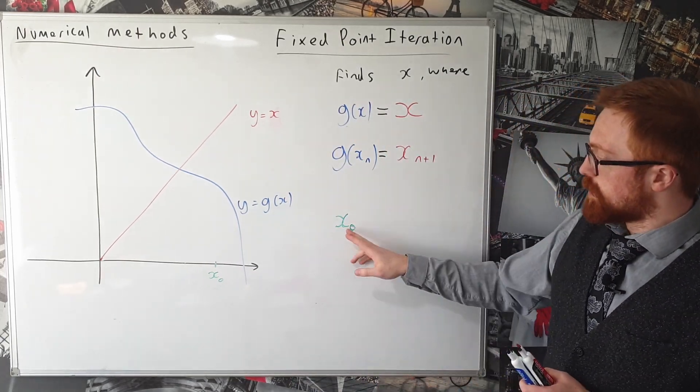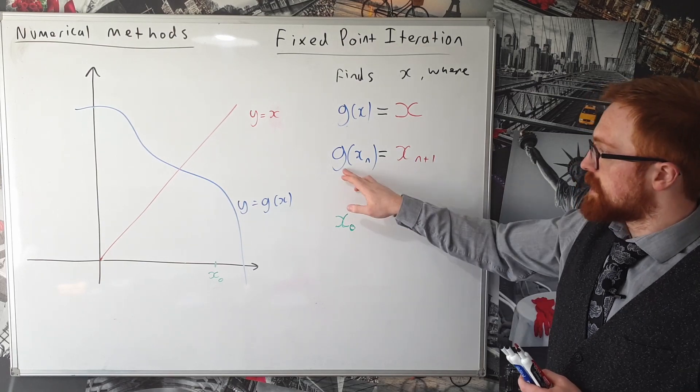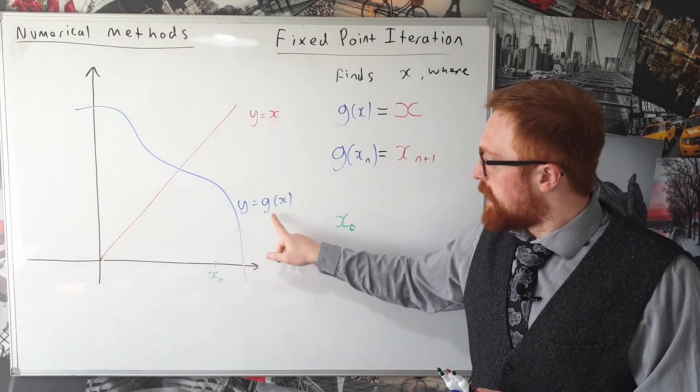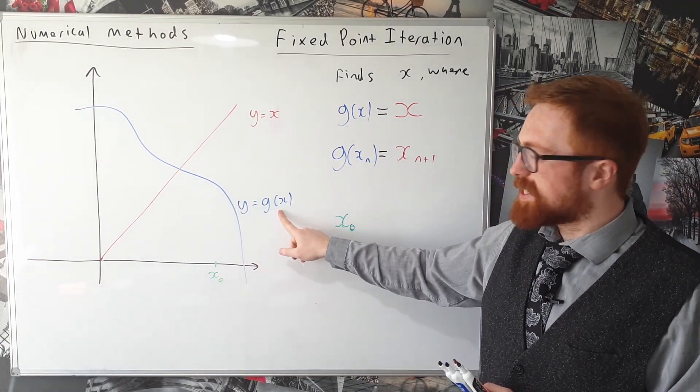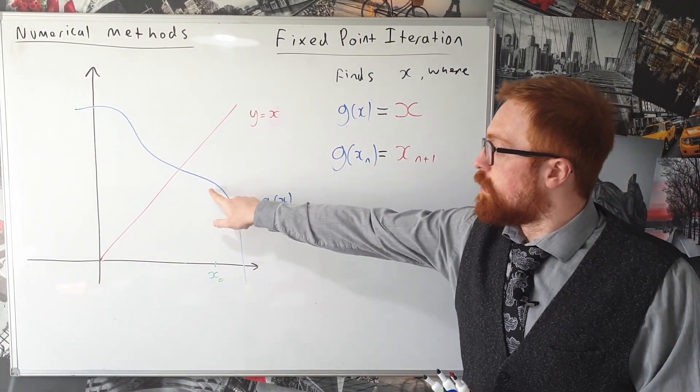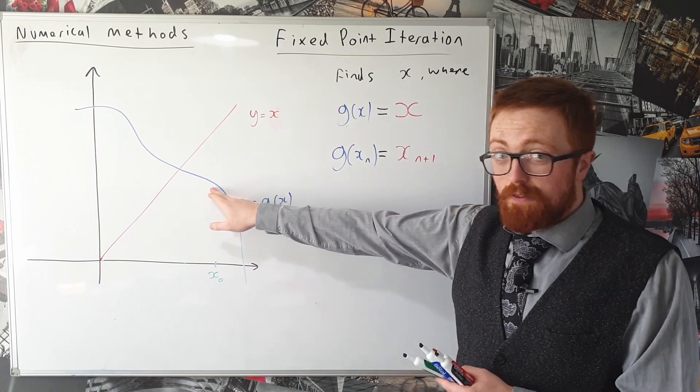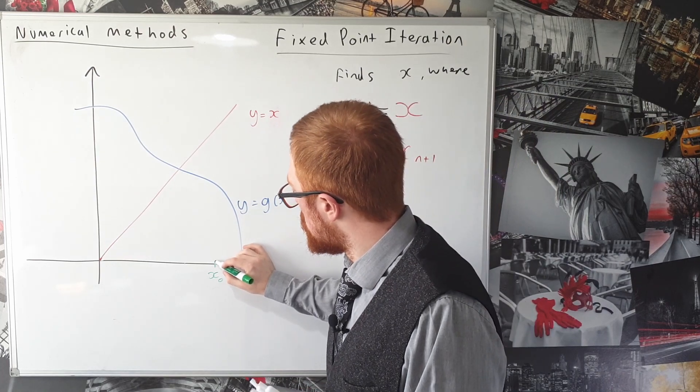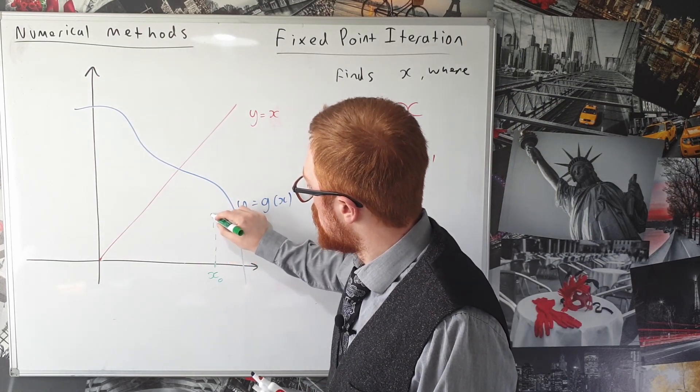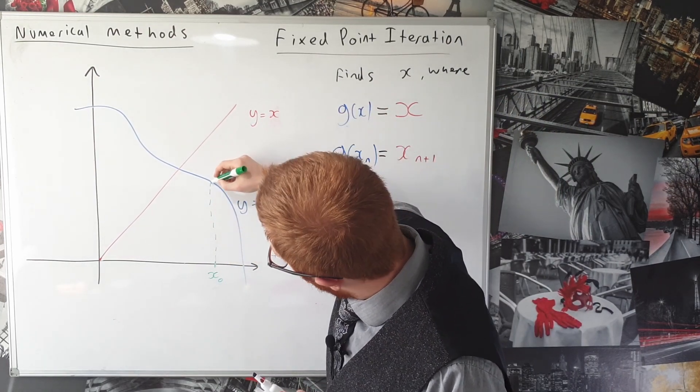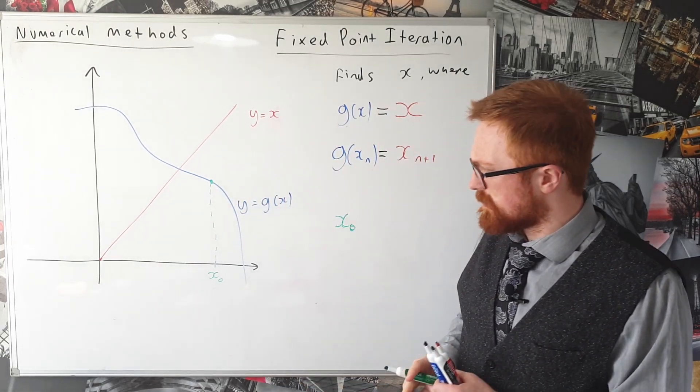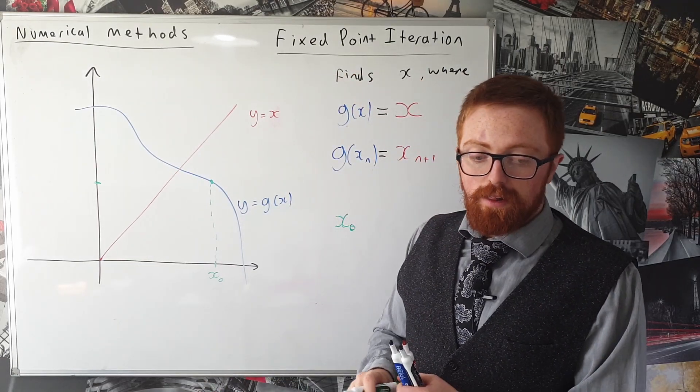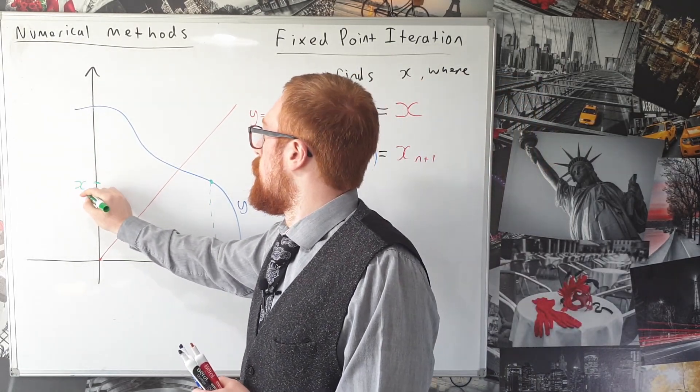So what we're going to do is we're going to substitute x_0 into our function g and now if we substitute a value into g what that spits out is the y coordinate of that point. So to find the value we get out here if we go up from our x_0 up to our curve then whatever that y coordinate is that's our next x value, that's going to be x_1.